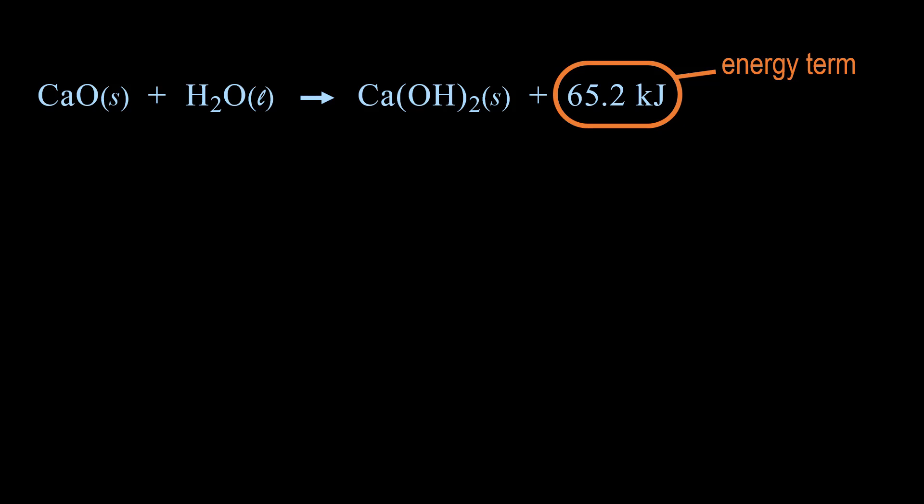There are various pieces of information the energy term can give us, and we will go through four reactions to show the different ways the energy term expresses information, and then go through several conversion problems. The energy term tells us the energy change occurring in the reaction, and here it is placed on the product side for this reaction, the significance of which we will get to in a moment.